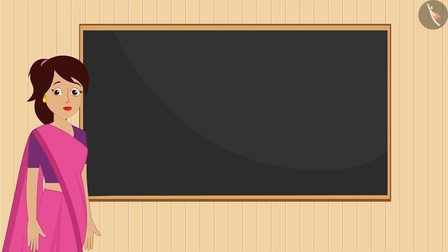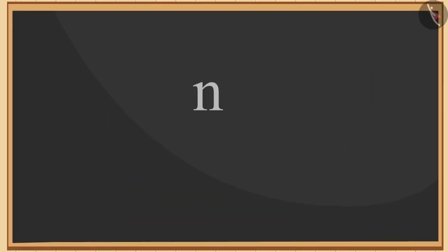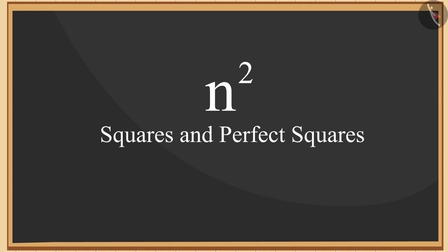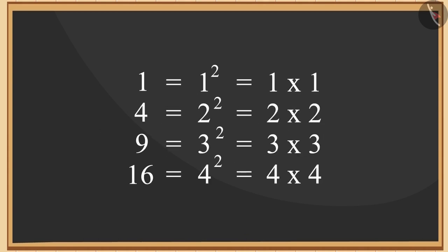Do you know that all such natural numbers which can be expressed as the square of a natural number are called square numbers or perfect square numbers? For example, look at these numbers: 1, 4, 9, and 16 are square numbers.